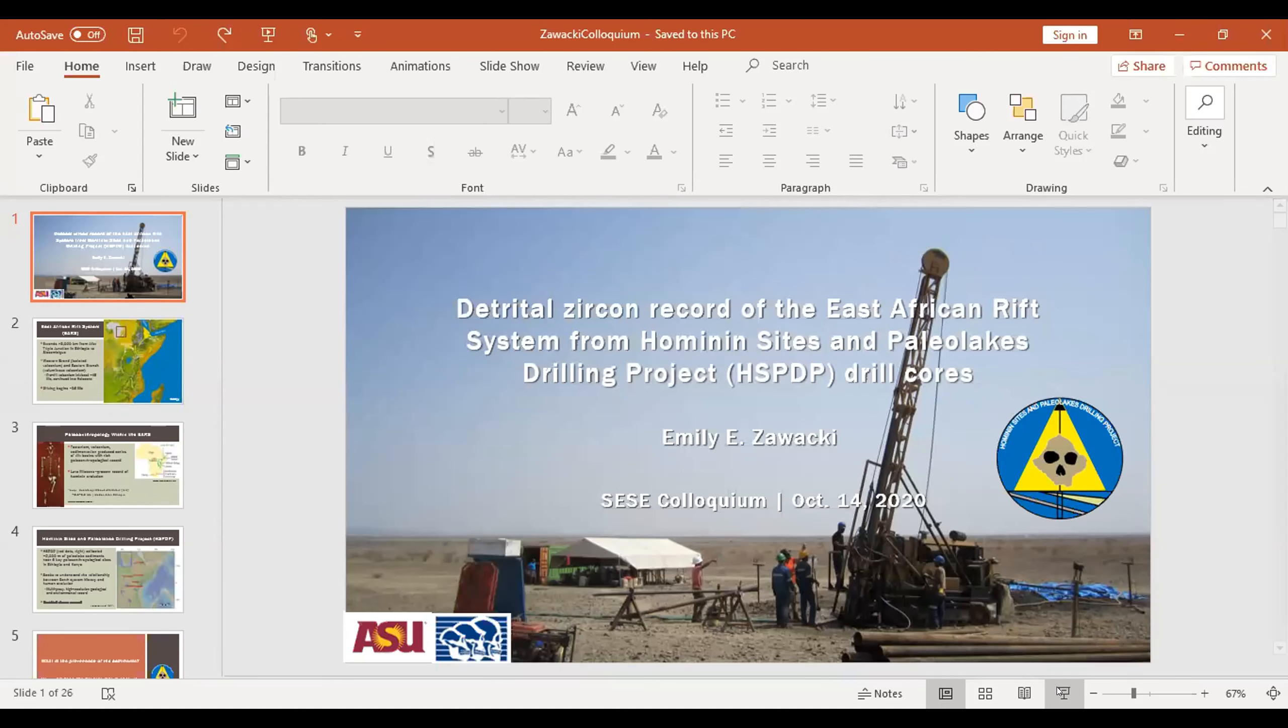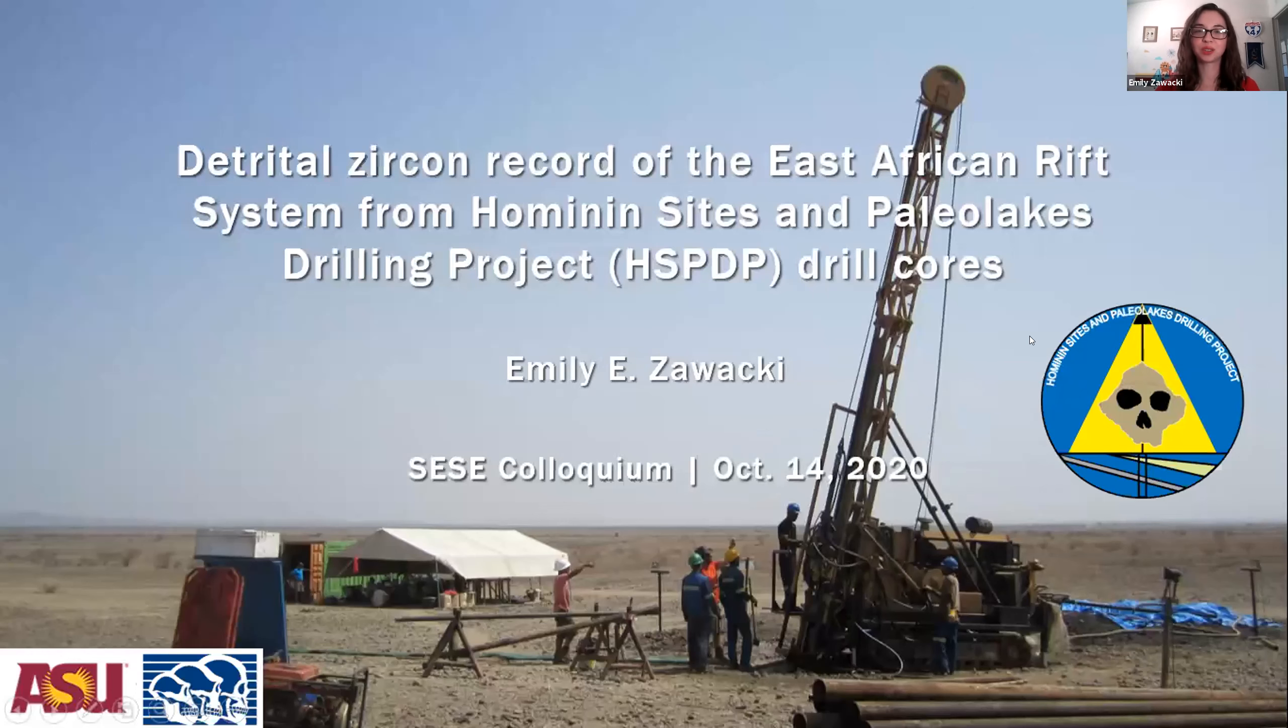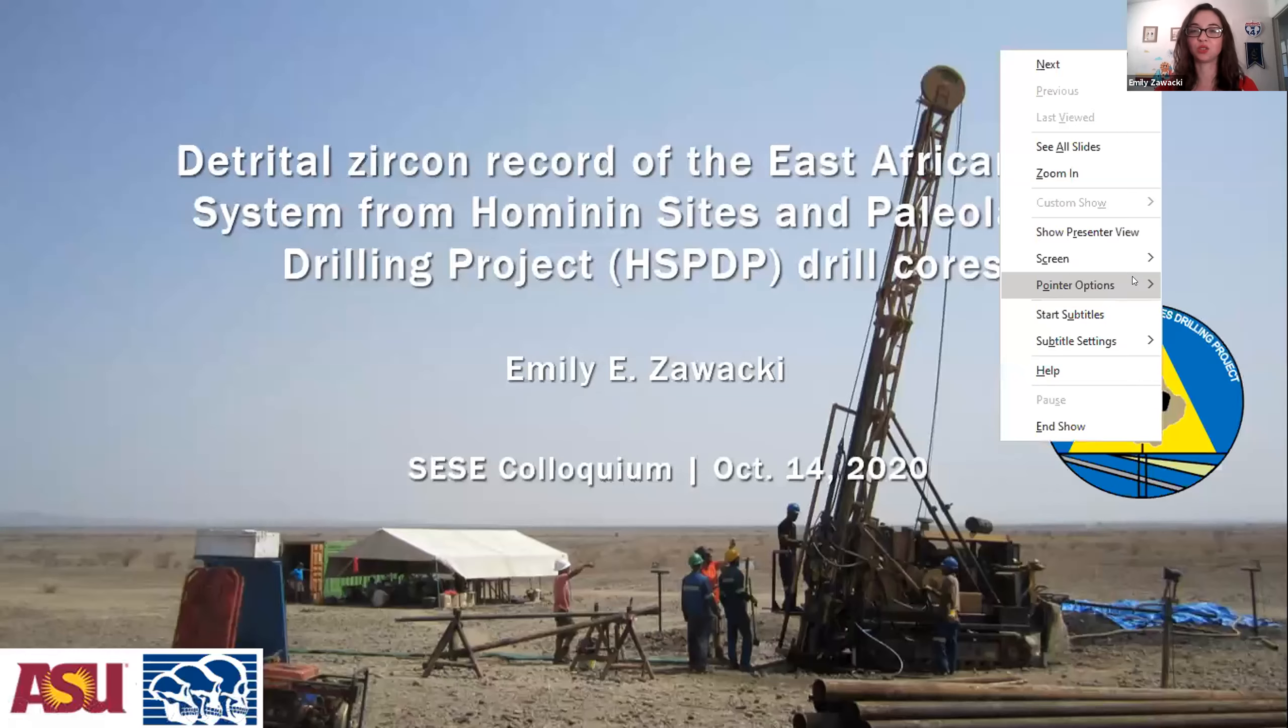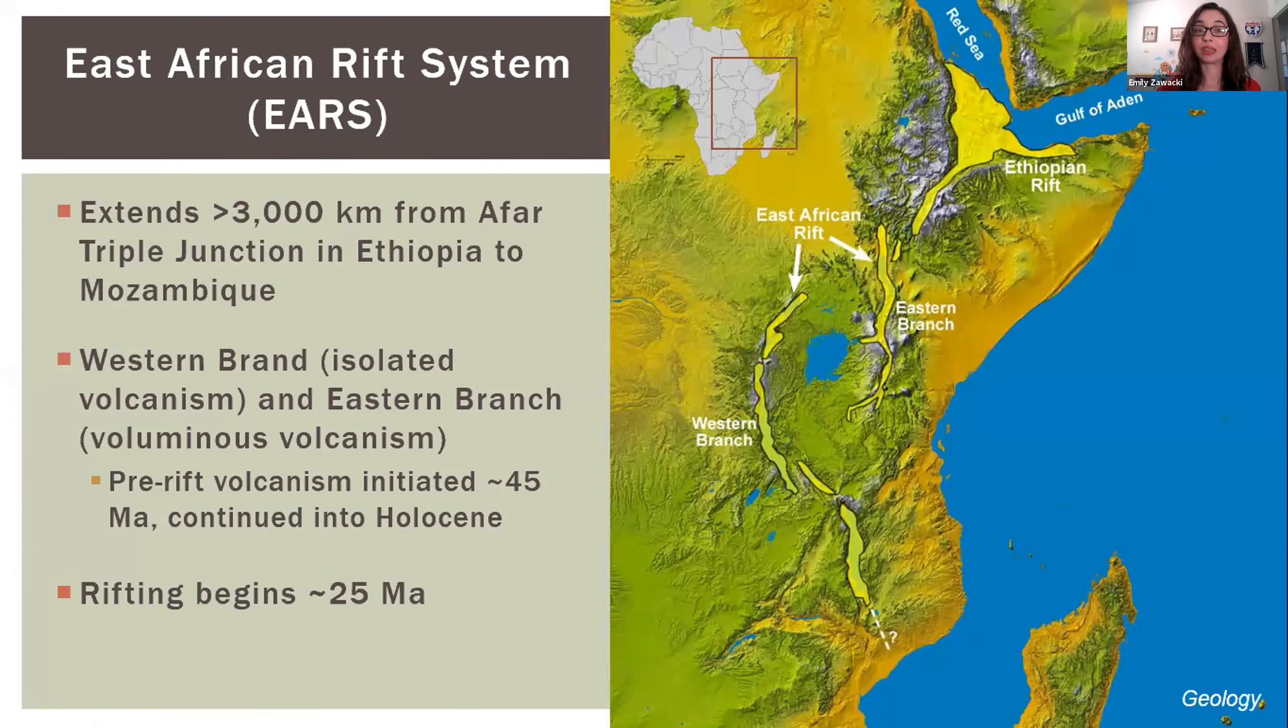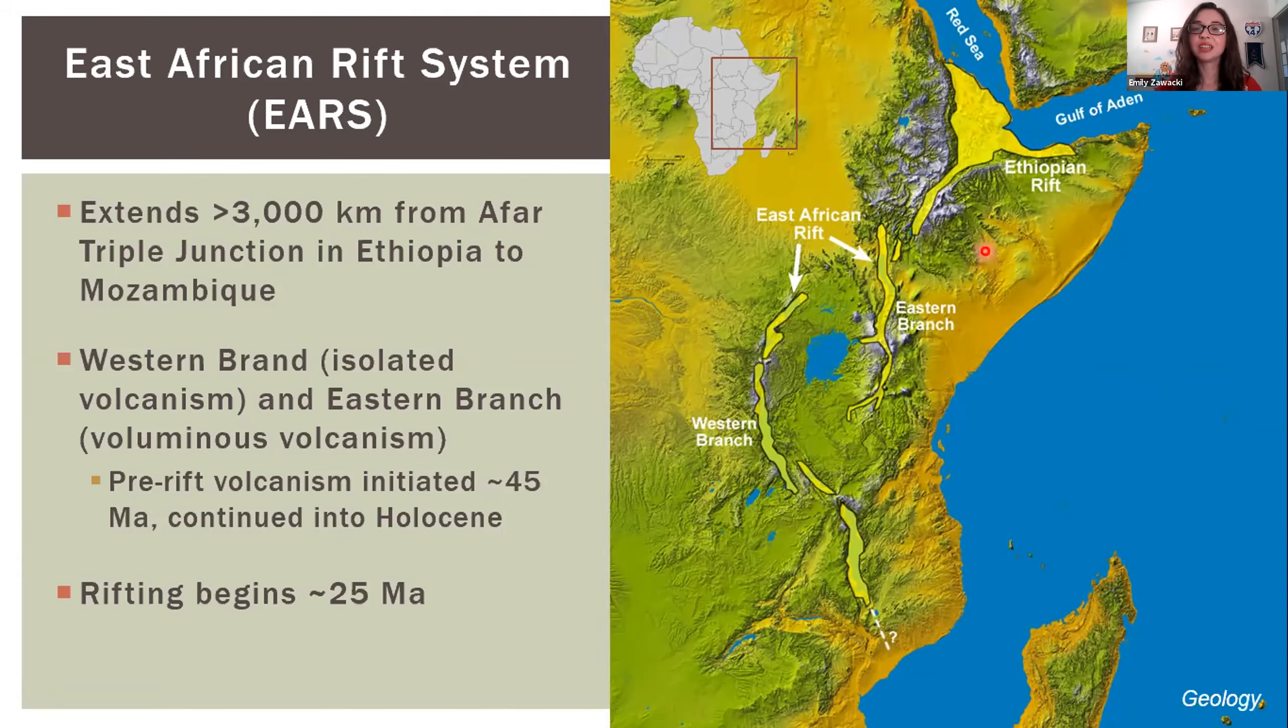Today I'm going to be talking about the detrital zircon record of the East African rift system from Hominin Sites and Paleo Lakes Drilling Project or HSPDP drill cores. The East African rift system is a region of active continental rifting. It extends for over 3000 kilometers from the Afar triple junction down to Mozambique. Pre-rift volcanism initiated around 45 million years ago and active rifting began about 25 million years ago.